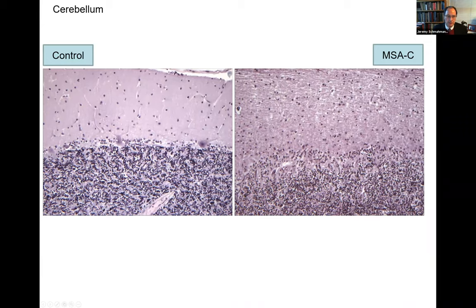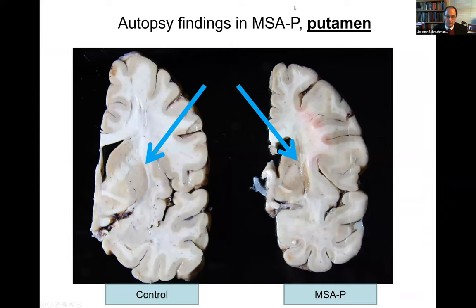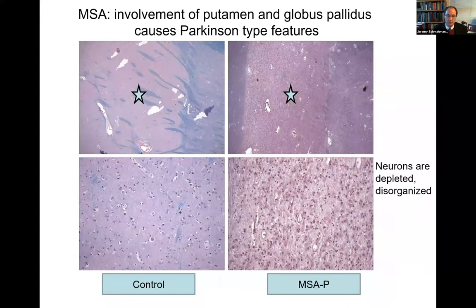The Purkinje neurons do get affected — here they are in normal tissue, and in MSA they are gone. The molecular layer is affected and there is dropout in the granule cells as well. In MSA-P, the Parkinsonian version, the putamen is markedly affected and shrunken. The putamen in MSA-P gets smaller, and as they evolve, MSA-C patients develop Parkinsonism because of putamen involvement. In MSA-P, or very late MSA-C when Parkinsonism sets in, you see the shrunken gliotic putamen with depletion of neurons and gliosis.